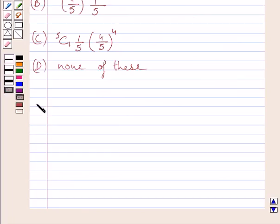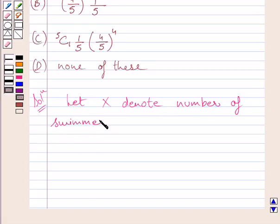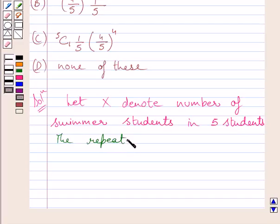Let us now start with the solution. Let us assume that X denotes the number of swimmer students in 5 students. The repeated selections of students are Bernoulli trials.